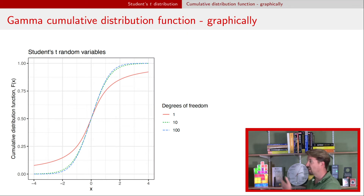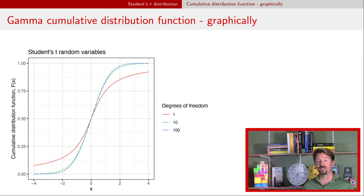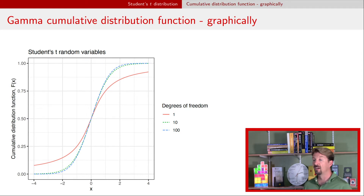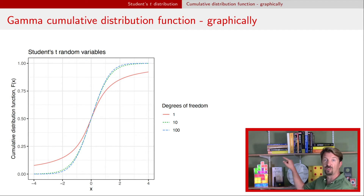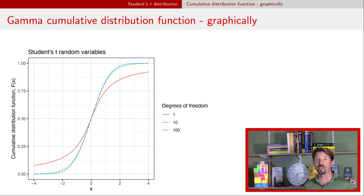Here are the CDFs drawn graphically for the same three cases: 1, 10, and 100 degrees of freedom. We can see a nice sigmoidal shape for all cases, centered at zero, which is the mean. The steepness of the curve right at zero depends on the degrees of freedom, with higher degrees of freedom indicating a steeper curve at zero.